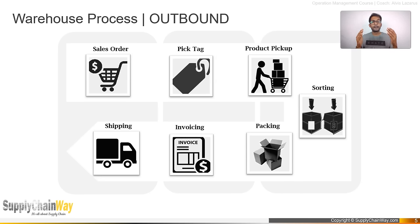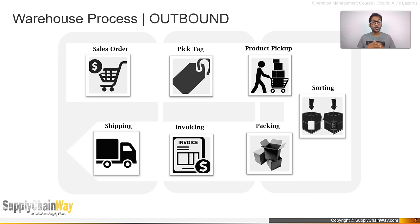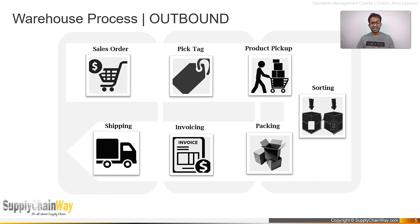As a warehouse consultant, invoicing before picking is never recommended — it creates huge complications. For example, if you invoice a customer but when you go to pick the product it is damaged or not available due to a stock accounting issue, you have to cancel the invoice and inform the customer. The correct sequence is: order processing → pick tag generation → picking → sorting → packing → invoicing → loading → shipping.